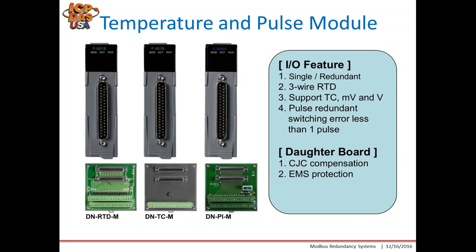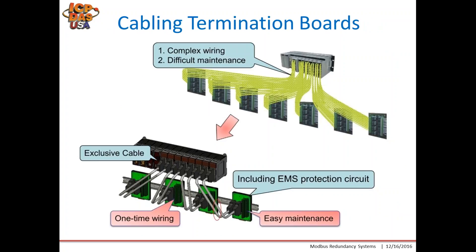For temperature and pulse modules, here are a few examples: the F8016, F8015, and F8084, which is our pulse module. The corresponding daughter boards are shown at the bottom. For cabling and termination, this example shows how everything is interconnected to the slot IO modules. Wiring can be very complex if you use terminal blocks where everything is connected. Our system incorporates DB cables, which is much neater — you wire all your sensors to the daughter boards for one-time wiring and easy maintenance.